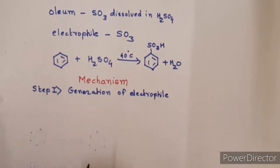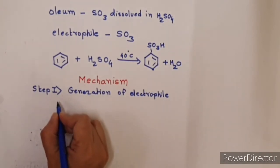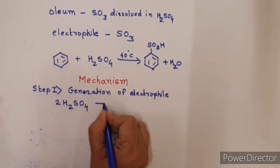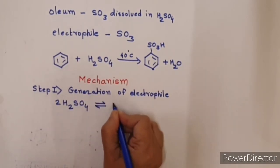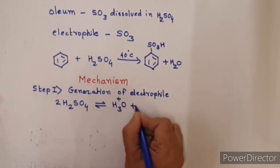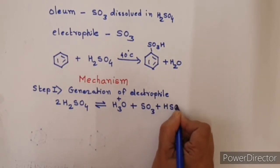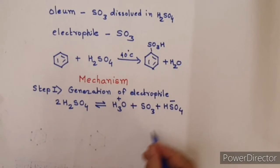For sulfonation, we use reagent concentrated H2SO4. There exists equilibrium in H2SO4. Two H2SO4 molecules react to form hydronium ion, SO3, and HSO4-. In this, the electrophile is SO3.